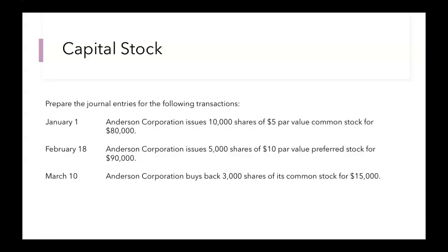Let's review some journal entries for capital stock transactions. In this example, we need to prepare journal entries for three different transactions: a company issues some common stock, then they issue some preferred stock, and then they buy back 3,000 shares of their common stock.